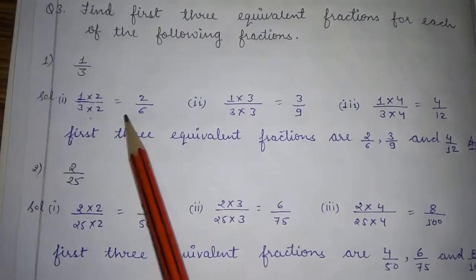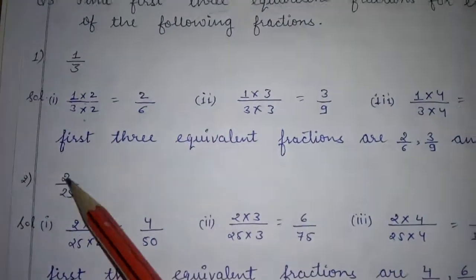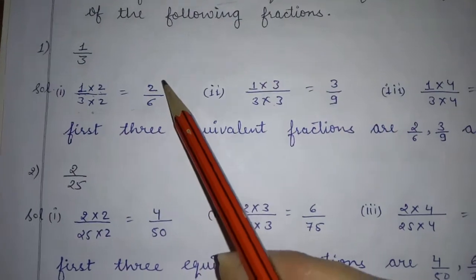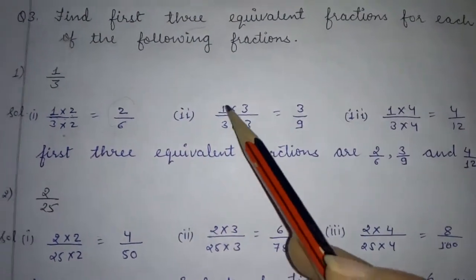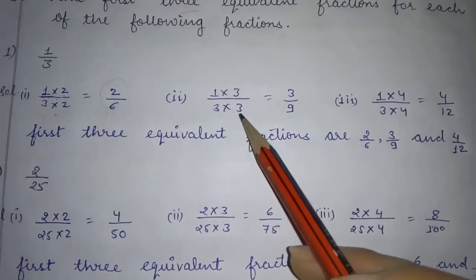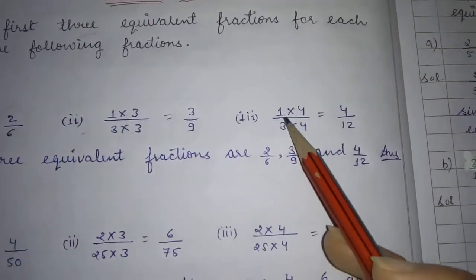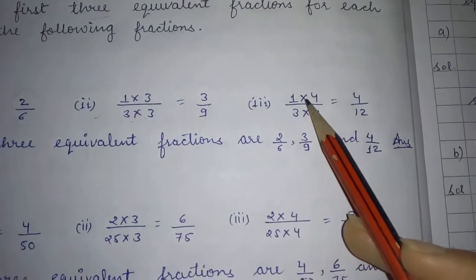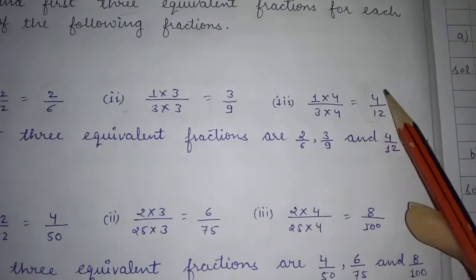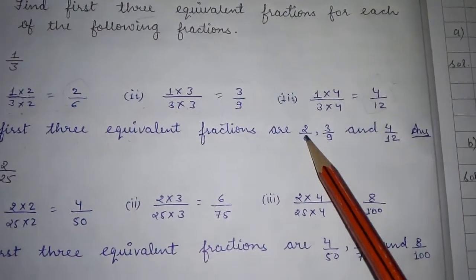Question mein 3 equivalent fractions maange hain isliye hum 4 pe ruk jaayenge. For 1 by 3: multiply by 2 — 1×2=2, 3×2=6 — so 2 by 6 is the first equivalent fraction. Multiply by 3 — 1×3=3, 3×3=9 — so 3 by 9 is the second. Multiply by 4 — 1×4=4, 3×4=12 — so 4 by 12 is the third.